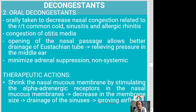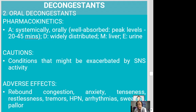Pharmacokinetics of oral decongestants: absorbed systemically and orally, with peak levels reached 20 to 45 minutes after onset. Widely distributed, metabolized by the liver, excreted through urine. Cautions are the same as conditions that might be exacerbated by sympathetic nervous system activities. Adverse effects include rebound congestion, anxiety, tenseness, restlessness, tremors, hypertension, sweating, and palpitations.